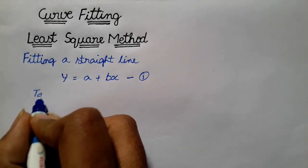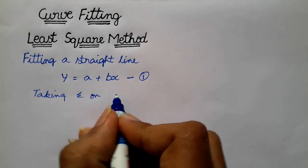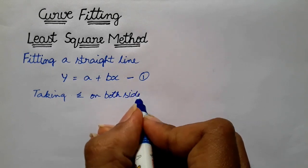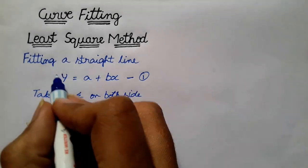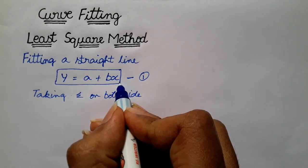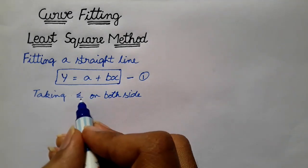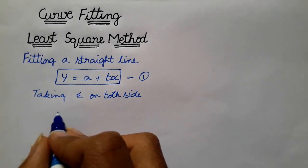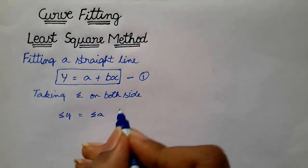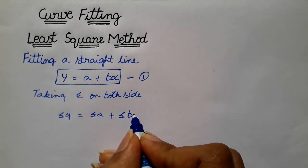Taking sigma on both sides — left side and right side. This is the main formula: y is equal to a plus bx. Taking sigma on both sides: sigma y is equal to sigma a plus sigma bx.